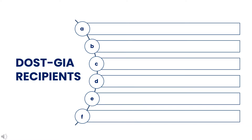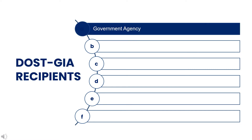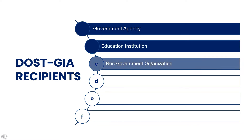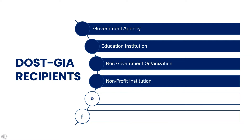The following are the eligible DOST-GIA recipients: Government Agency, Education Institution, Non-government Organizations, Nonprofit Institution, Private Company, and Startups.